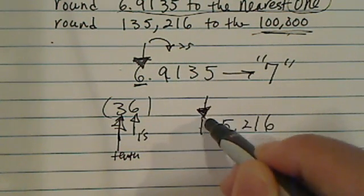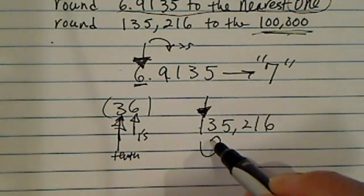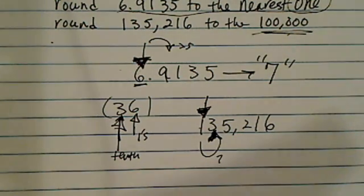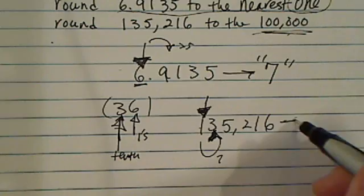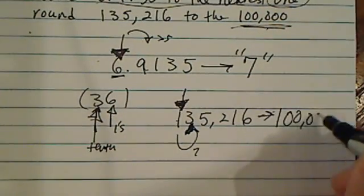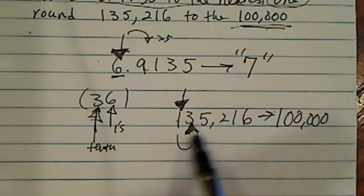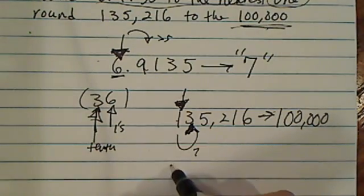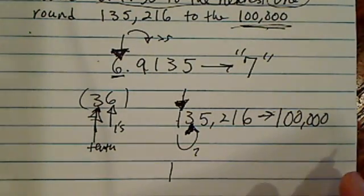Once you have the arrow here, then you look behind you. Is this number right behind it bigger than 5? Answer is no. Then this number, if you round it, you're going to have 1. So basically, 135,216 is roughly 100,000. It's a little bit bigger than 100,000, but it's not close enough to 200,000.